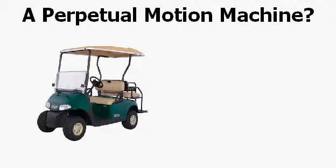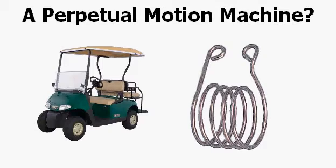A real-life example of this is the electric golf cart. Whenever the driver takes his foot off the accelerator, the DC motor becomes a generator. The motion of the electric cart continues to turn the motor-slash-generator, causing it to produce electrical power. This power is dumped through a resistor, causing a load on the motor-slash-generator and causing the cart to suddenly slow down. This resistor looks like a coil spring with two electrical wires attached — if you raise the seat on an electric golf cart, you can see it.